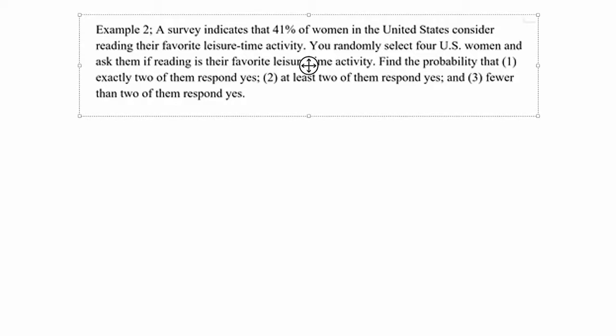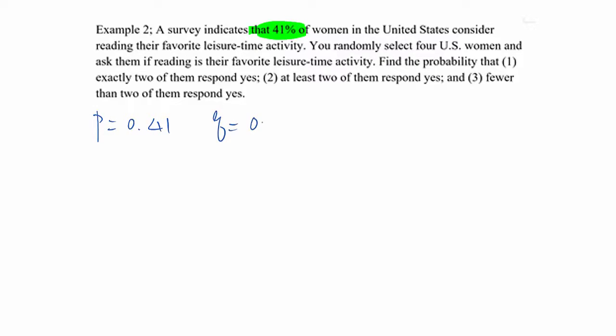As you see, this one shows the probability value already. So I can say p equals 0.41, then q must be 0.59. Therefore, the sum of p plus q will be 100%.